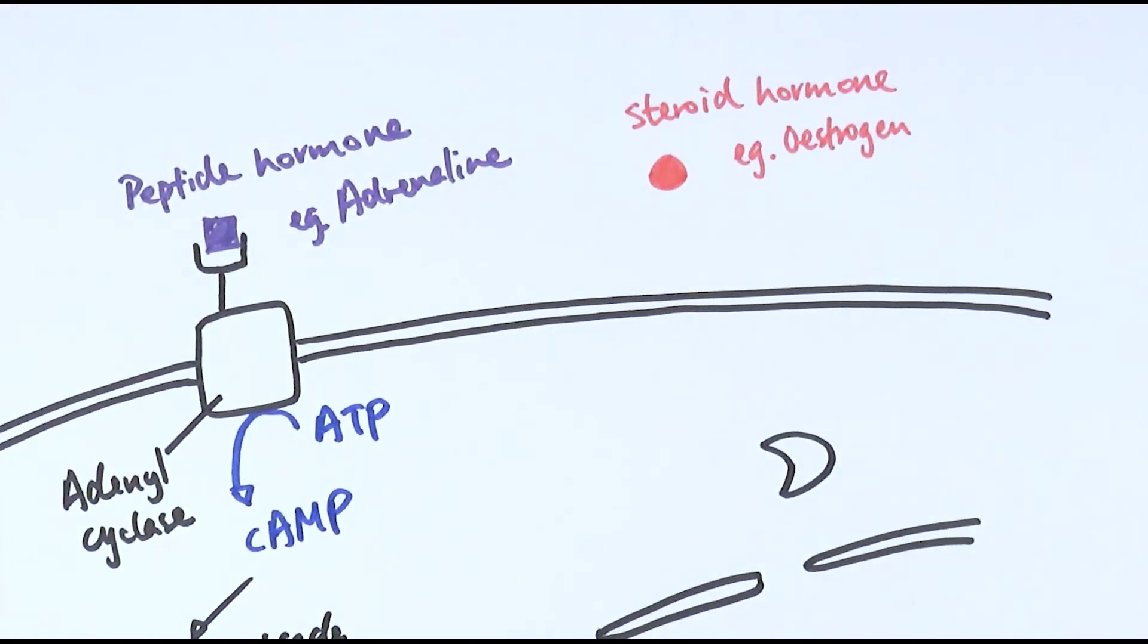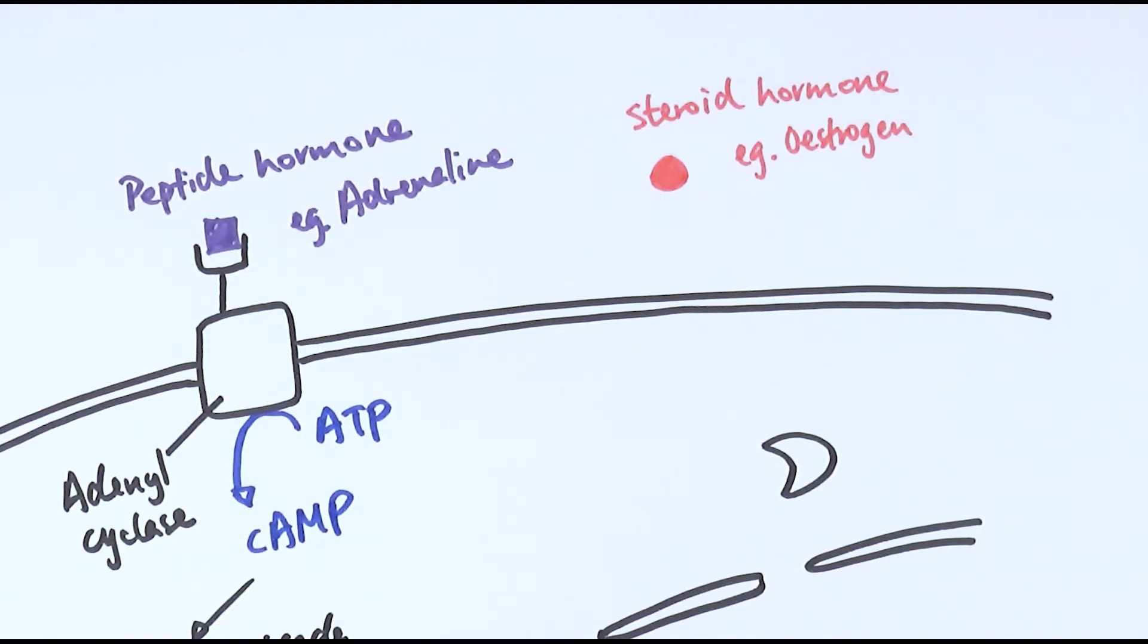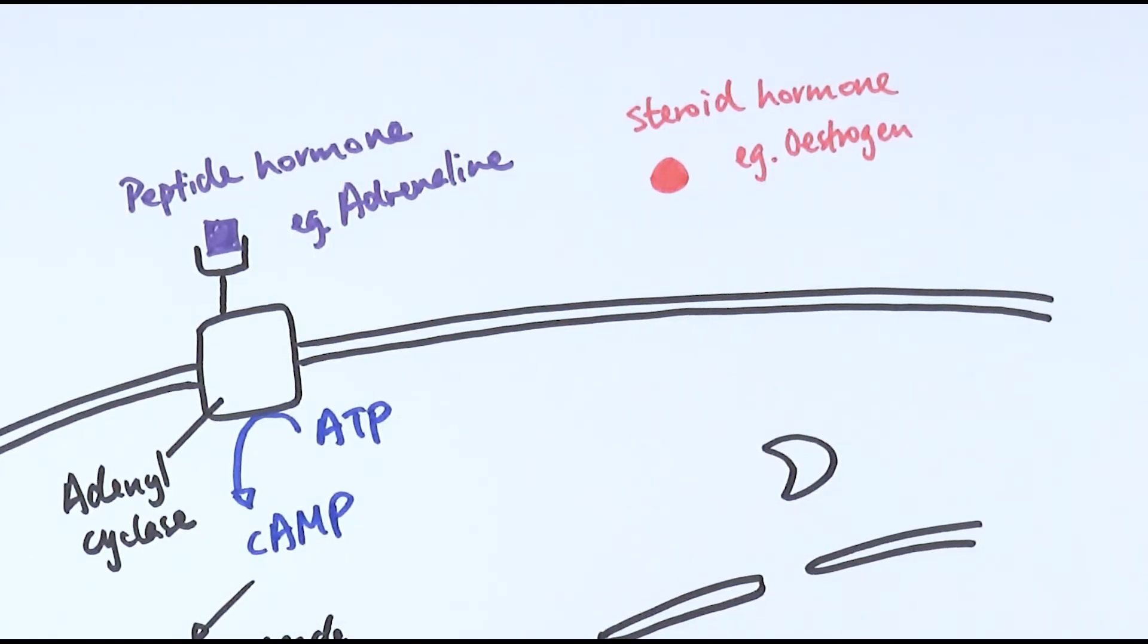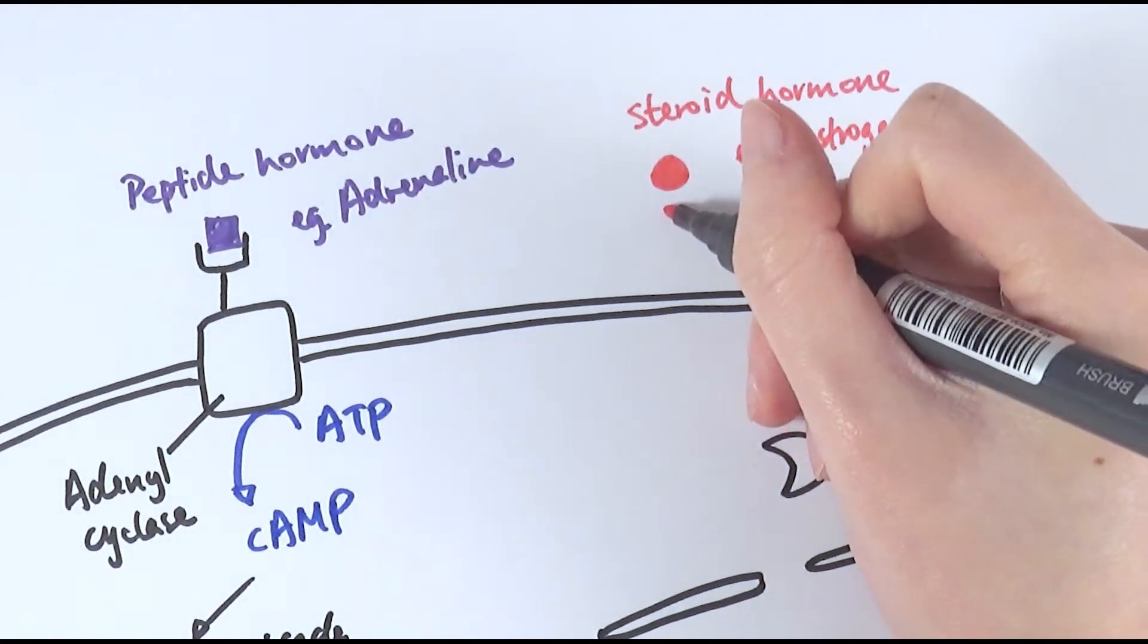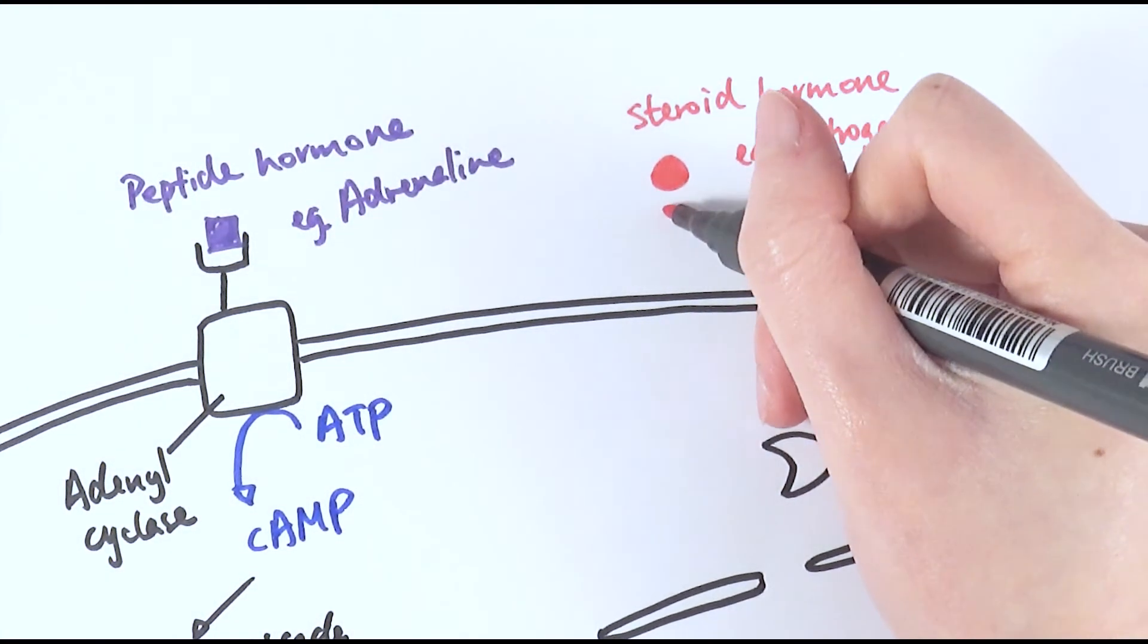Now the other type of hormone is called steroid hormones which are lipid-based or lipid soluble. An example for that would be estrogen. Because they are lipid-based, they will be able to actually just simply diffuse across the membrane here because they are basically of the same chemical.